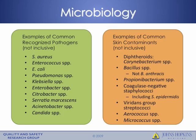The left panel gives examples of commonly recognized pathogens for use in Criterion 1. This is not an inclusive list, but organisms considered pathogens include Staph aureus, Enterococcus species, E. coli, Pseudomonas, Klebsiella, Enterobacter, Citrobacter, Serratia marcescens, Acinetobacter, and Candida species. The right panel shows examples of common skin contaminants for use in Criterion 2 definitions, including diphtheroids (usually Corynebacterium species), Bacillus species (with the exception of Bacillus anthracis), Propionibacterium species, coagulase negative Staphylococci including Staph epidermidis, Viridans group streptococci, Aerococcus species, and Micrococcus species.